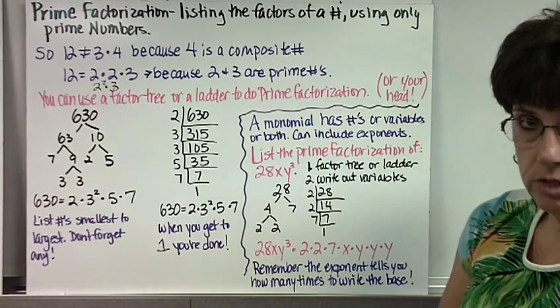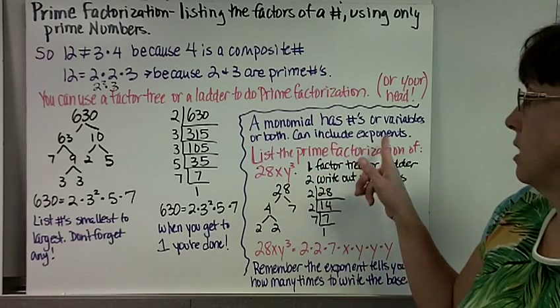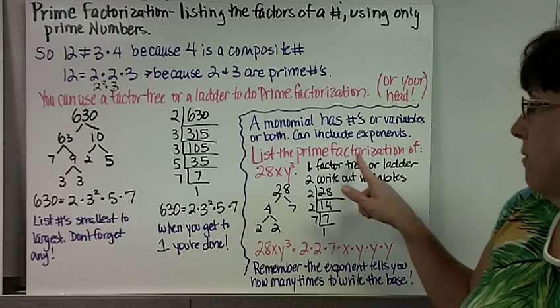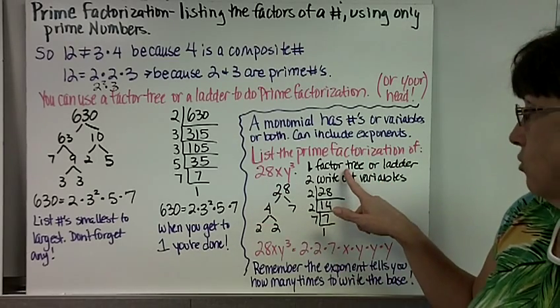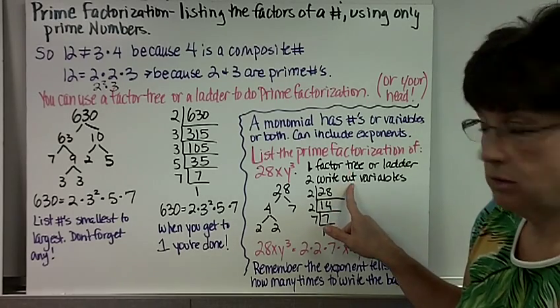A monomial has numbers or variables or both. It can include exponents. So if you need to list the prime factorization of a monomial, you use your factor tree or ladder for your numbers, and then you just write out the variables.